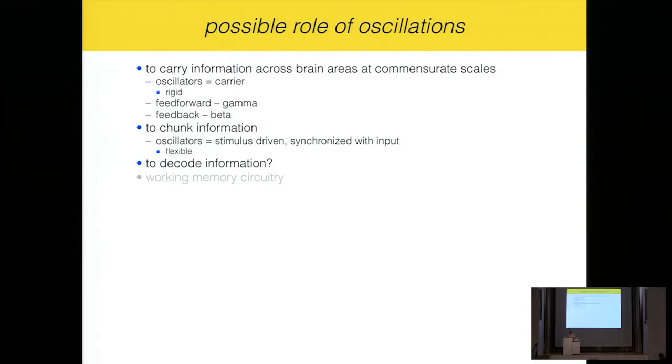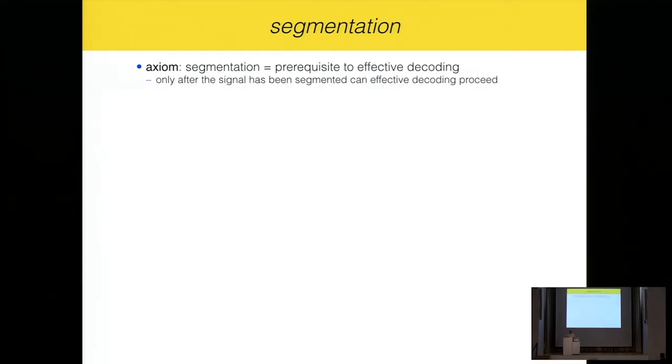Yet another possibility is maybe involving in the decoding process. And yet another possibility, away from the scope of what we talk about, is mechanisms of working memory, like Idihard and Lisman, for example. The theta is part of the circuitry. So talking about segmentation, I suggest an axiom. Maybe I'm wrong. But I'm suggesting that segmentation is a prerequisite for effective decoding. Without having a good segmentation, you will not have a good decoding. So again, if I'm wrong in that, then I'm in trouble.